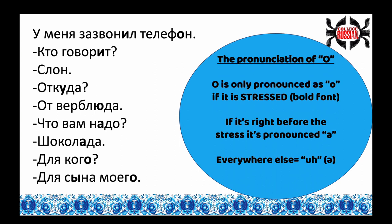So now that we've talked about that, let's go a little bit faster so you can really hear it in context. У меня зазвонил телефон. Кто говорит? Слон. Откуда? От верблюда. Что вам надо? Шоколада. Для кого? Для сына моего.